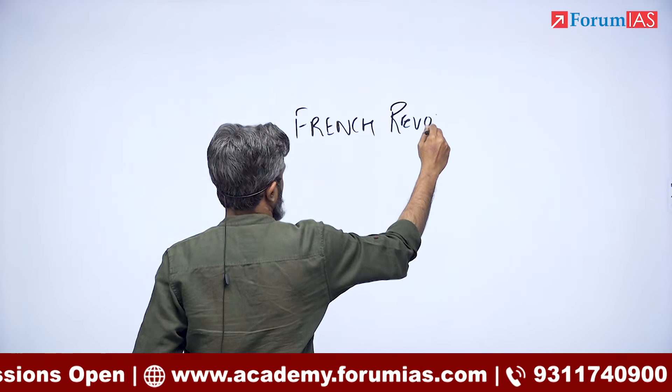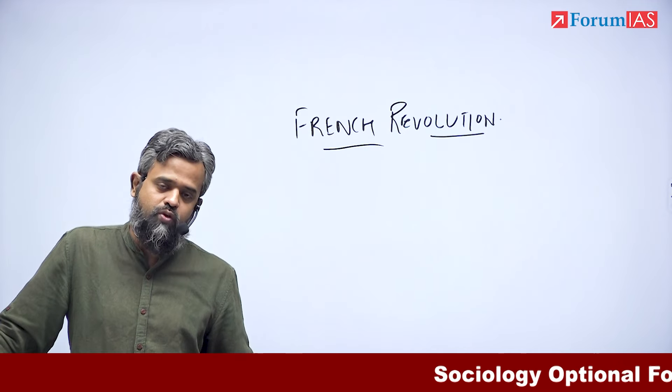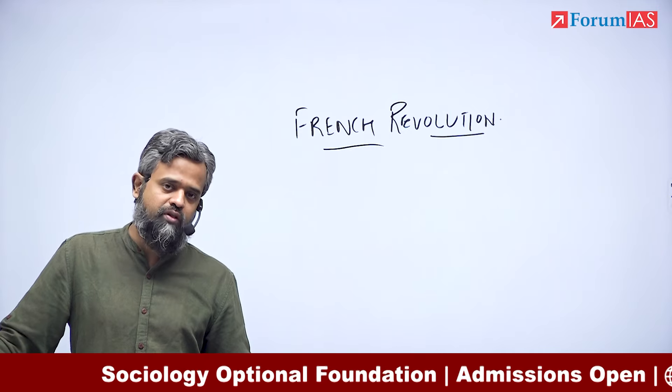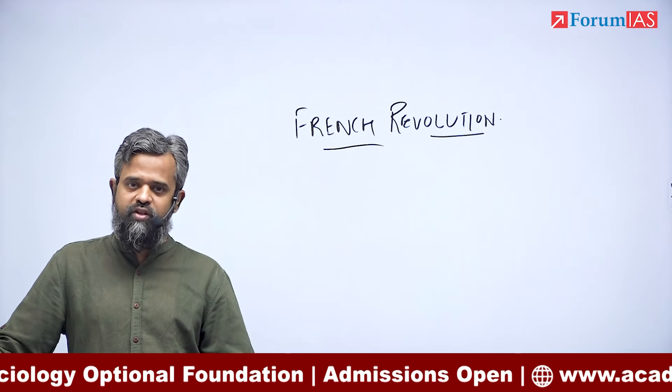When we are doing Unit 1 of Paper 1, we discuss the French Revolution, but we don't really think about it sociologically. We think about it the way any typical GS student would — the estate system, the taxation, the American War of Independence and how it affected the French soldiers who returned, the exploitative society, the Bourbon dynasty, and so on.